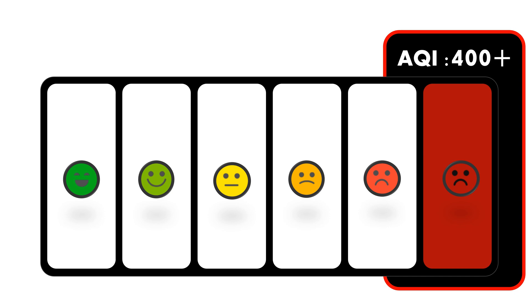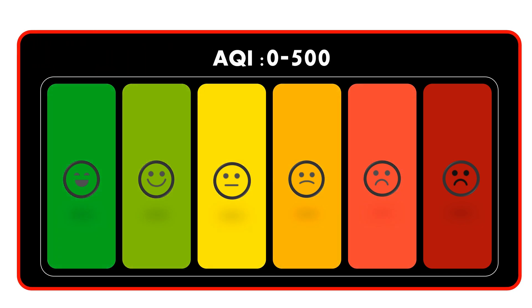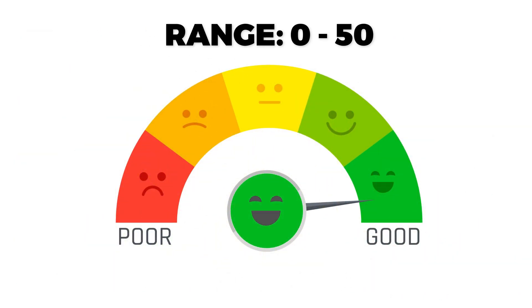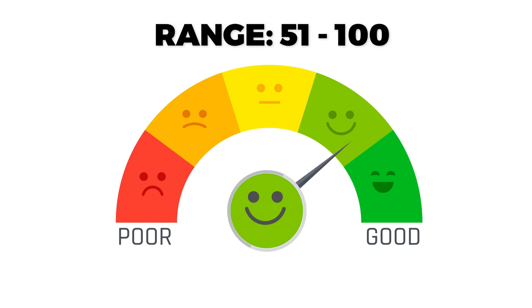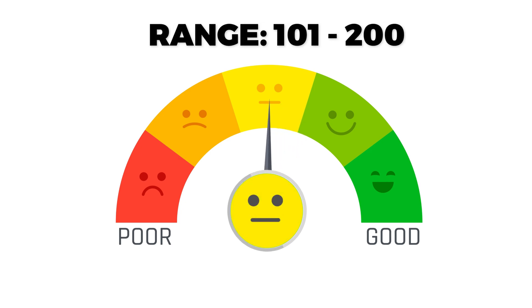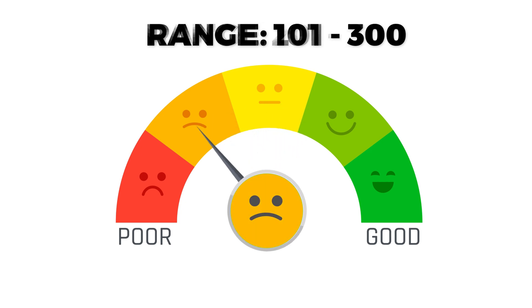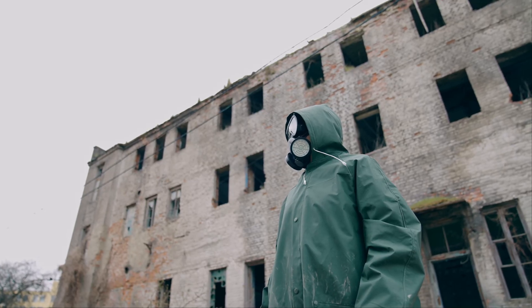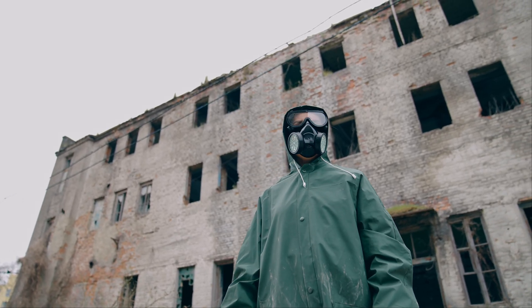Each color in the AQI scale represents a different level of air quality. Green is good, light green is satisfactory, yellow and orange indicate moderate to poor air quality, and red indicates very poor or severe conditions.